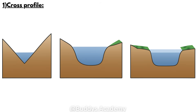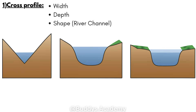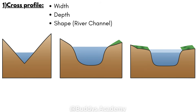So first let's look at our cross profile. Your cross profile is basically going to be a cut through or a cross section of a river at a very specific point in its course. And this profile is going to help us to see three things: the first being the width of the river channel — how wide the river is from one bank to the other — and your depth, which is how deep your river is from your water level all the way down to your riverbed.